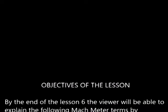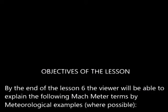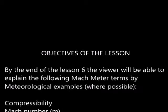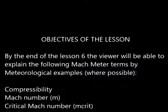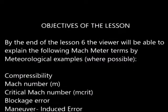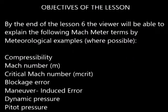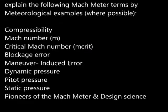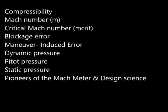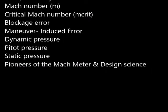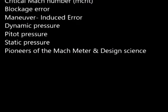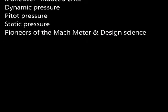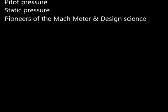The objectives of lesson 6: by the end of this lesson, the viewer will be able to explain the following Mach meter terms by meteorological examples where possible: compressibility, Mach number M, critical Mach number, Mach grid, blockage error, maneuver induced error, dynamic pressure, pitot pressure, static pressure, and pioneers of the Mach meter and design science.